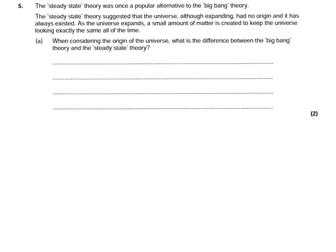In the first part of question 5, it says the steady state theory was once a popular alternative to the Big Bang Theory. The steady state theory suggests that the universe, although expanding, had no origin, and it has always existed. As the universe expands, a small amount of matter is created to keep the universe looking exactly the same all the time. When considering the origin of the universe, what is the difference between the Big Bang Theory and the steady state theory?